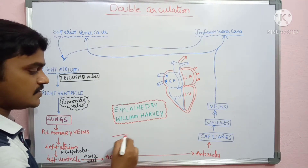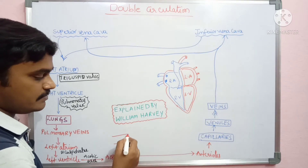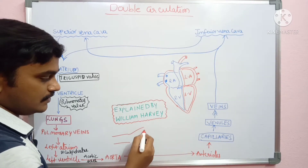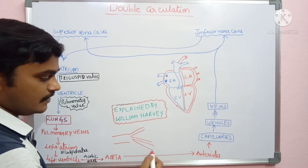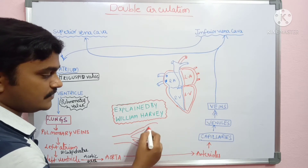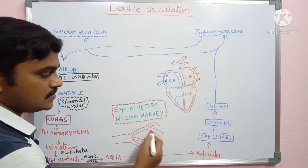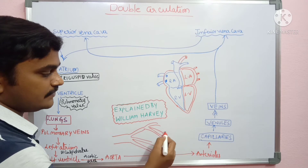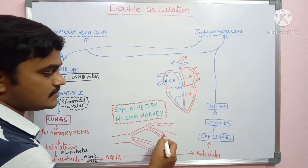These arteries divide into arterioles, and the arterioles further divide and distribute oxygenated blood throughout the body tissues.